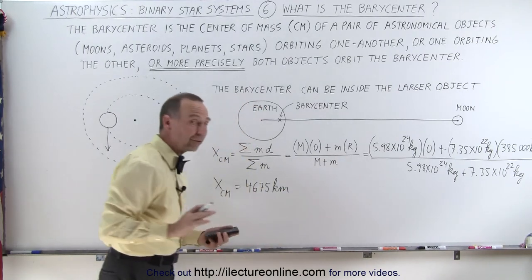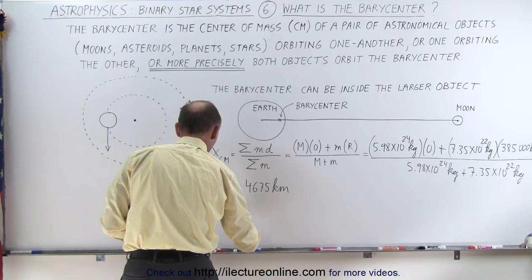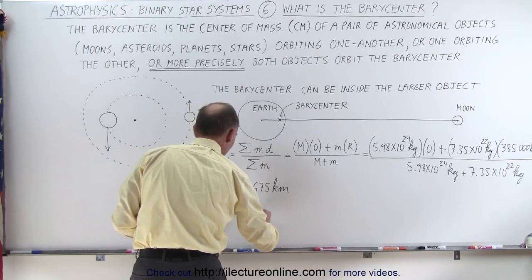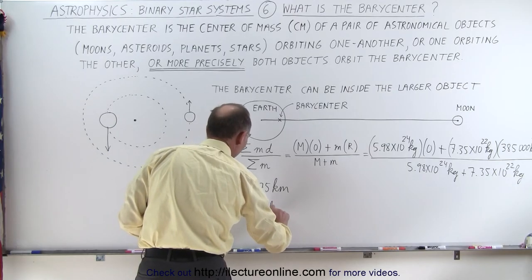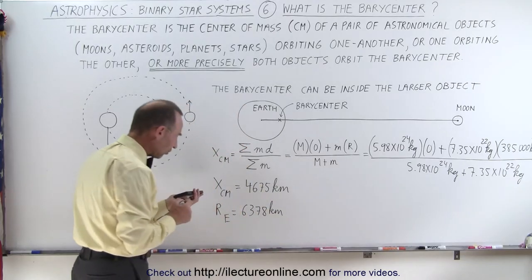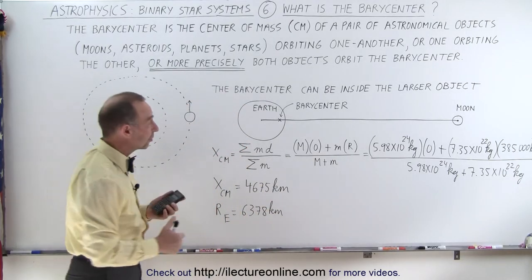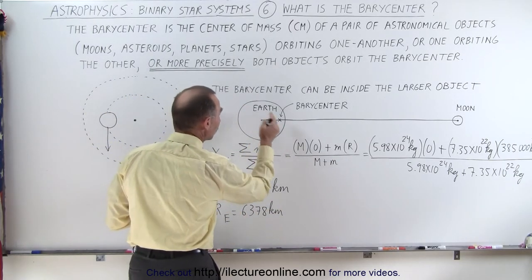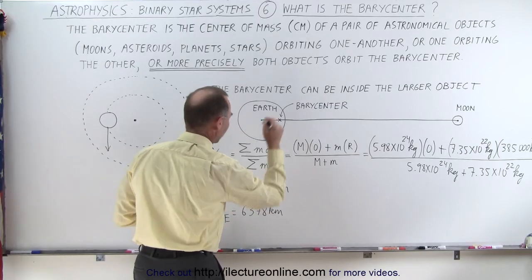Let's compare that to the radius of the Earth. The radius of the Earth is about 6,378 kilometers. So you can see that the barycenter is roughly two-thirds the distance from the center of the Earth to the surface of the Earth.